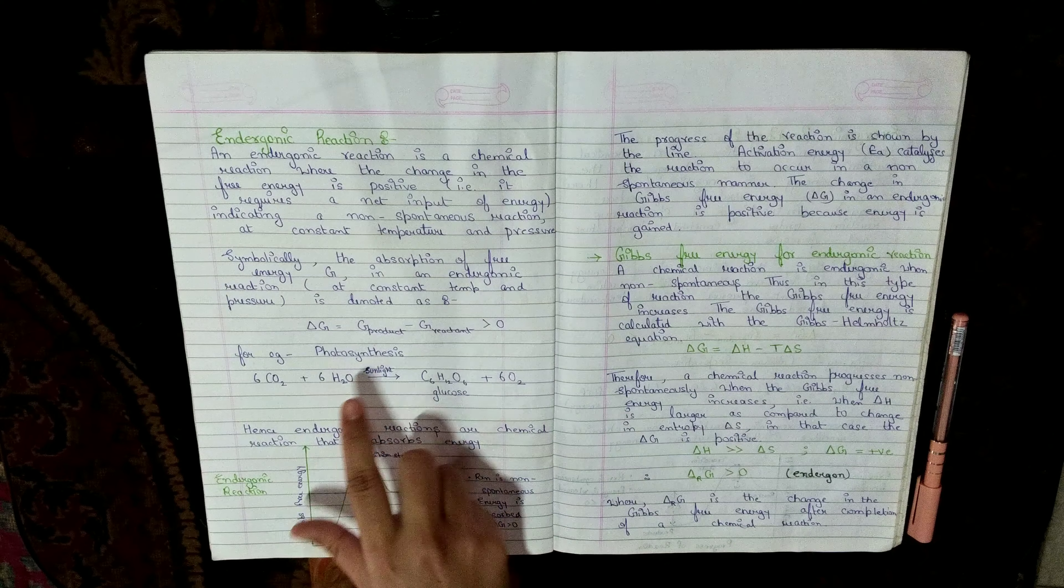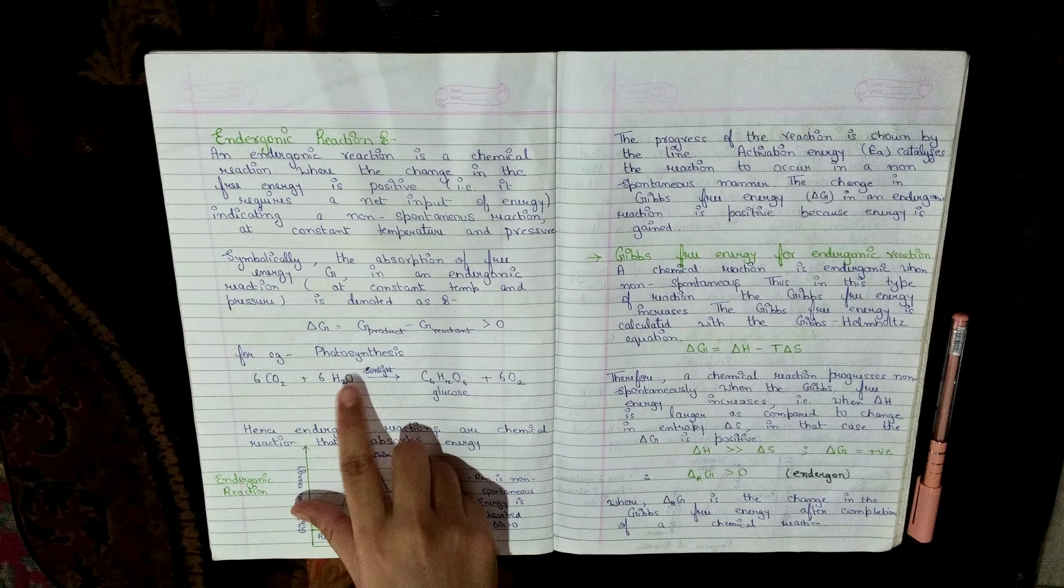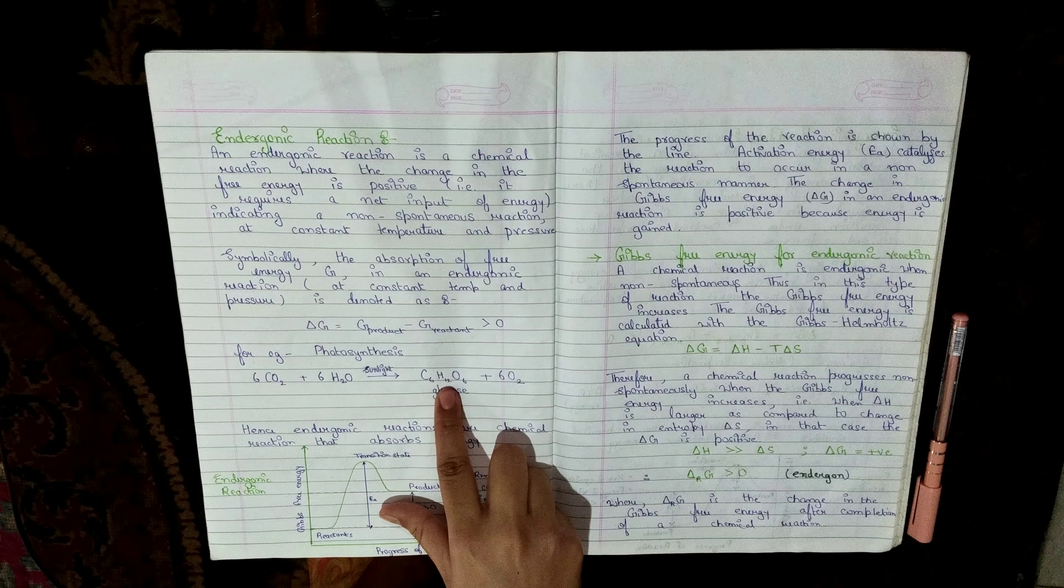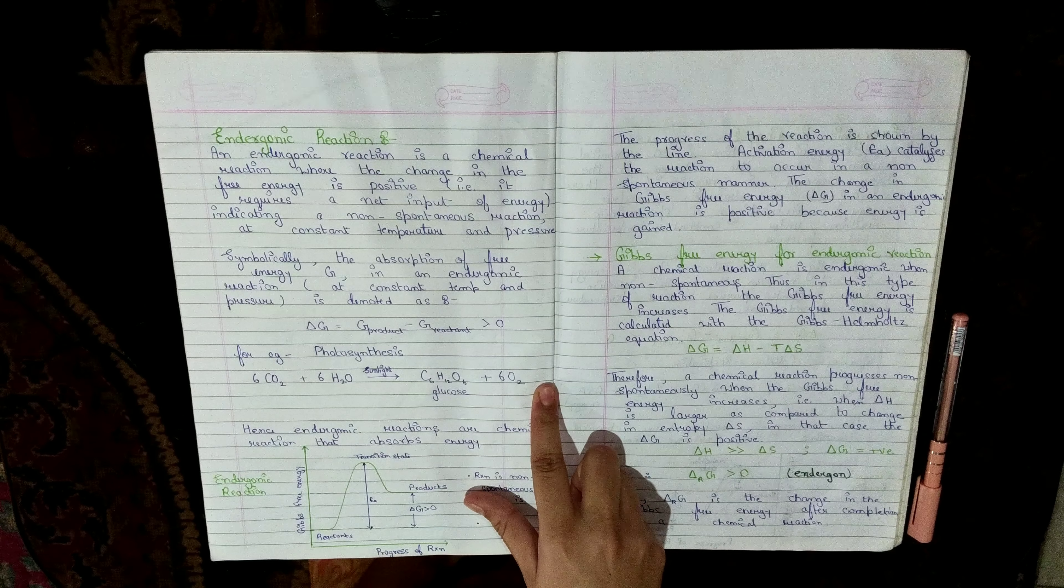An example of an endogonic reaction is photosynthesis. When six molecules of carbon dioxide react with six molecules of water in the presence of sunlight, it produces one molecule of glucose and six molecules of oxygen.